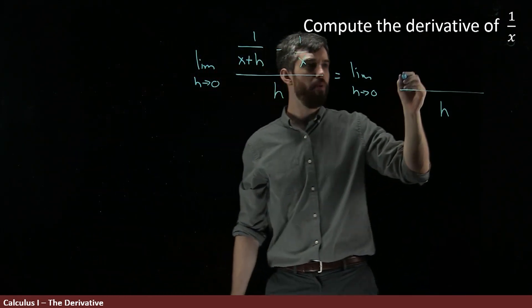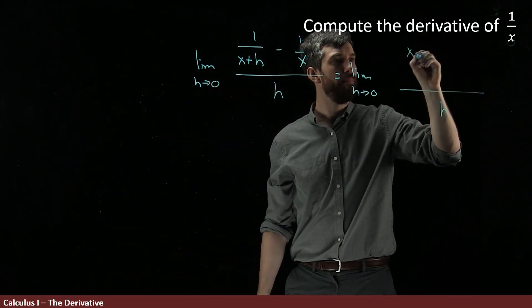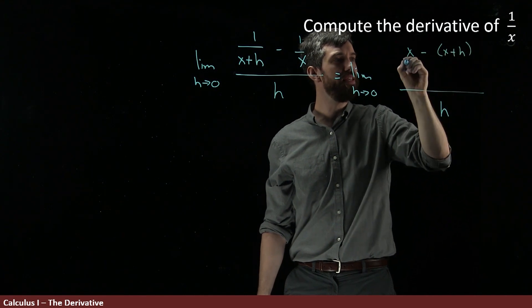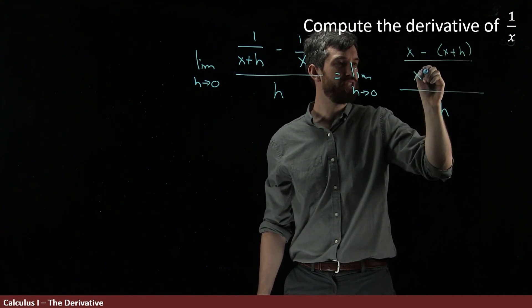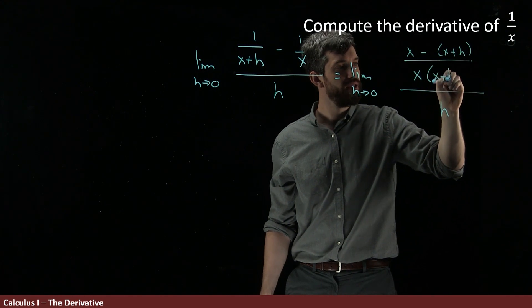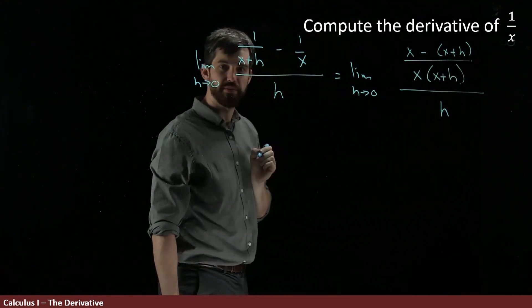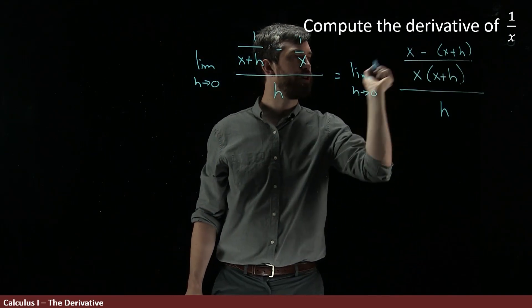So I'm going to say that what I have is an x minus x+h. And then this is all divided out by x multiplied by x+h. So I've done that little algebraic trickery.